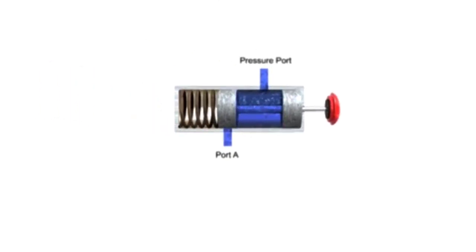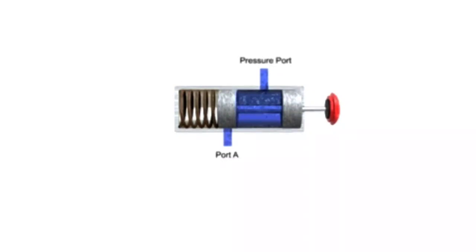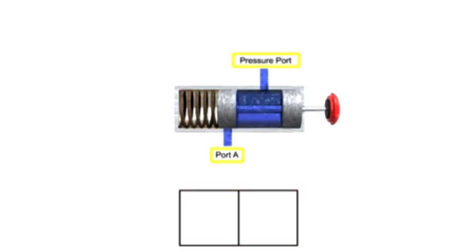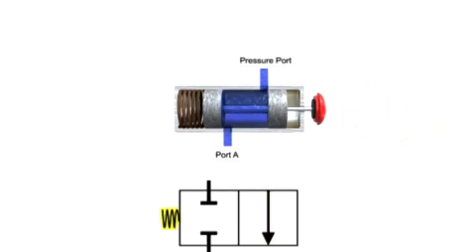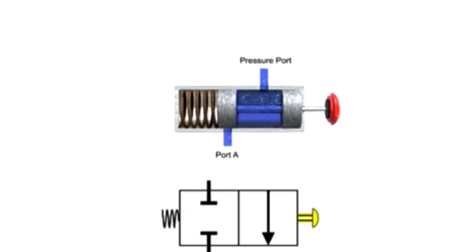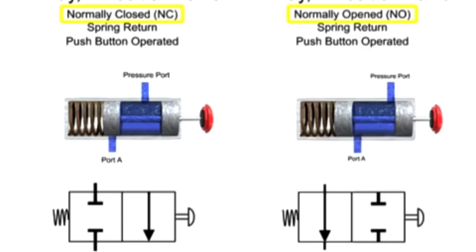Here is a similar valve to the one previously shown. It has two ports and two positions, so it is also a two-way, two-position valve. In the normal non-actuated position, both ports are blocked. Therefore, it is a normally closed valve. When the valve is actuated, fluid is allowed to flow from the pressure port to port A. A spring returns the valve to its normally closed position, and a push button actuates it to the open position. Therefore, this valve is a two-way, two-position, normally closed, spring return, push button operated valve. While it is similar to the previous example, the differences in the normal position make it a distinctly different valve.